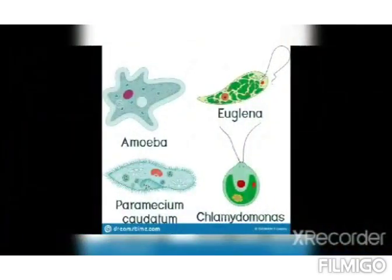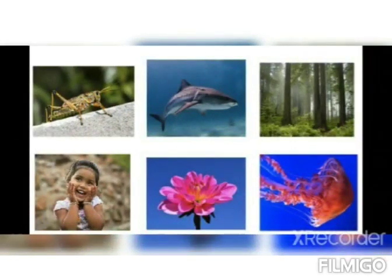Like plants, animals too show diversity. Some are unicellular — unicellular means organisms made of only one cell — for example protozoa, amoeba, paramecium, etc. Others are multicellular, meaning organisms which are made of many cells, for example human beings, fish, trees, flowers, monkeys, etc.